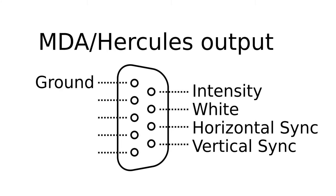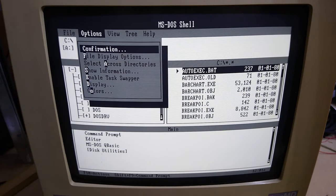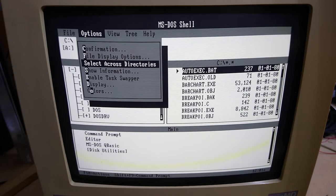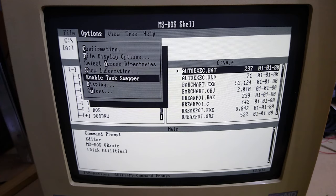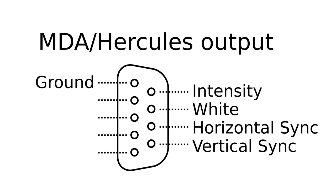Let's talk about the signals involved in monochrome video. Obviously there's only one colour — white — so we only need one digital video signal. But in text mode, the graphics card can vary the intensity of the colour to give different shades of grey, as you can see from this screenshot of DOS Shell, so we need an additional signal to specify that. The combination of these two signals gives us four different signal levels, or four different shades of grey to choose from.